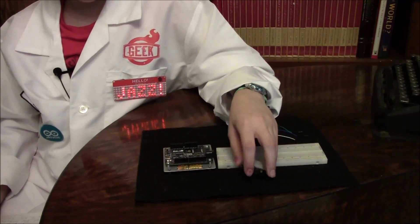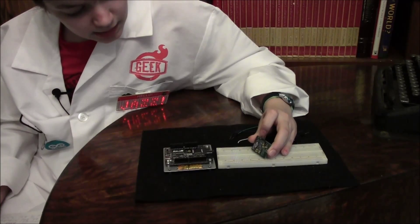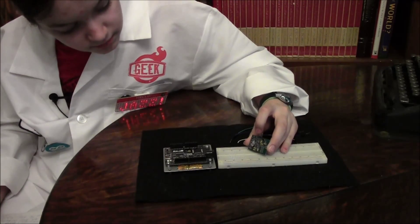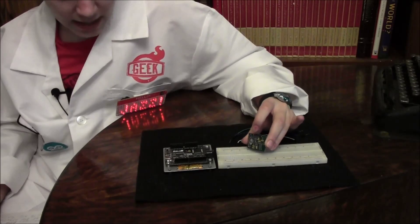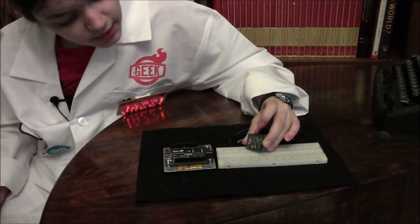The motion sensor has three pins: Out or signal, VCC, 5 volts, and ground.